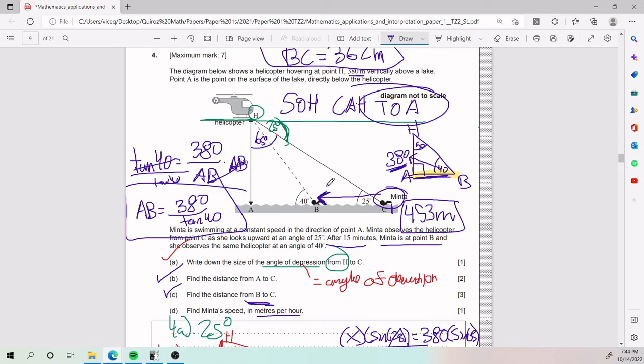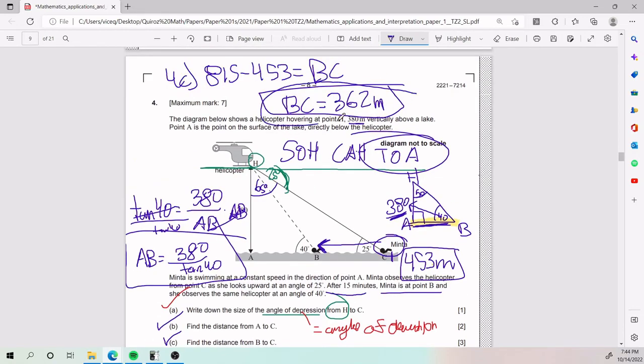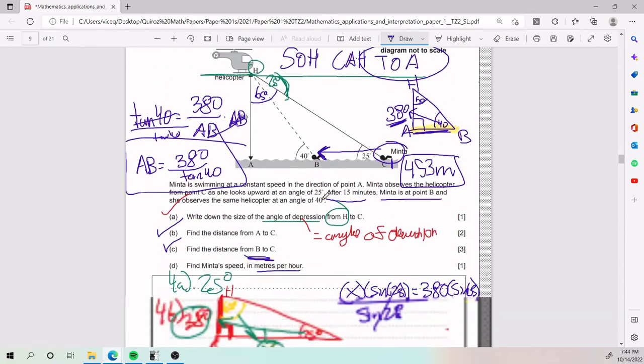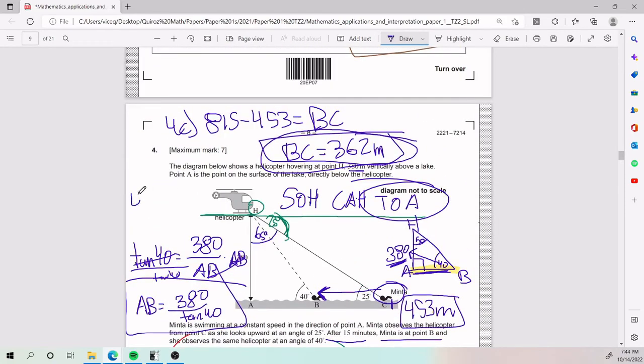And so what was her speed there? Well, what was the distance she traveled? We found that BC was 362 meters. So she does 362 meters. I'm just going to do it over here, maybe. She does 362 meters per 15 minutes. So instead of per 15 minutes, we need it in per hour. And so how do I turn 15 minutes into one hour?